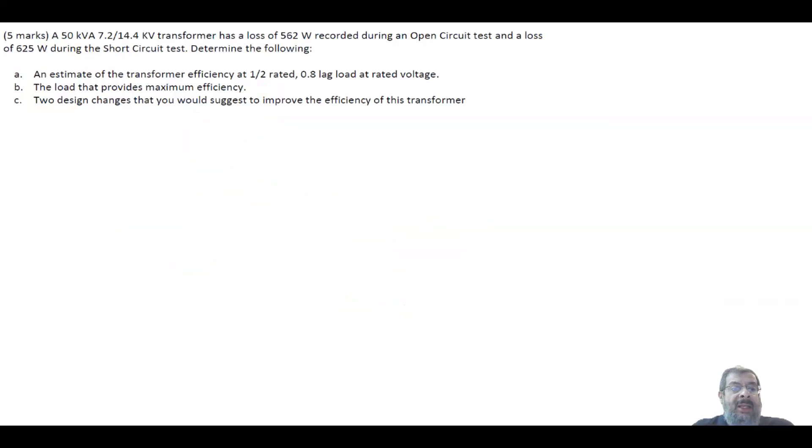The last part, two design changes that you would suggest to improve the efficiency. Now, we know that the efficiency is equal to Pout over Pout plus summation of the losses. And we have two losses. We have the winding loss, which is equal to I squared R. Now, I you don't have control over, because this is the demand coming from the customer. So you have control over R. What is R? It's the resistance of the winding.